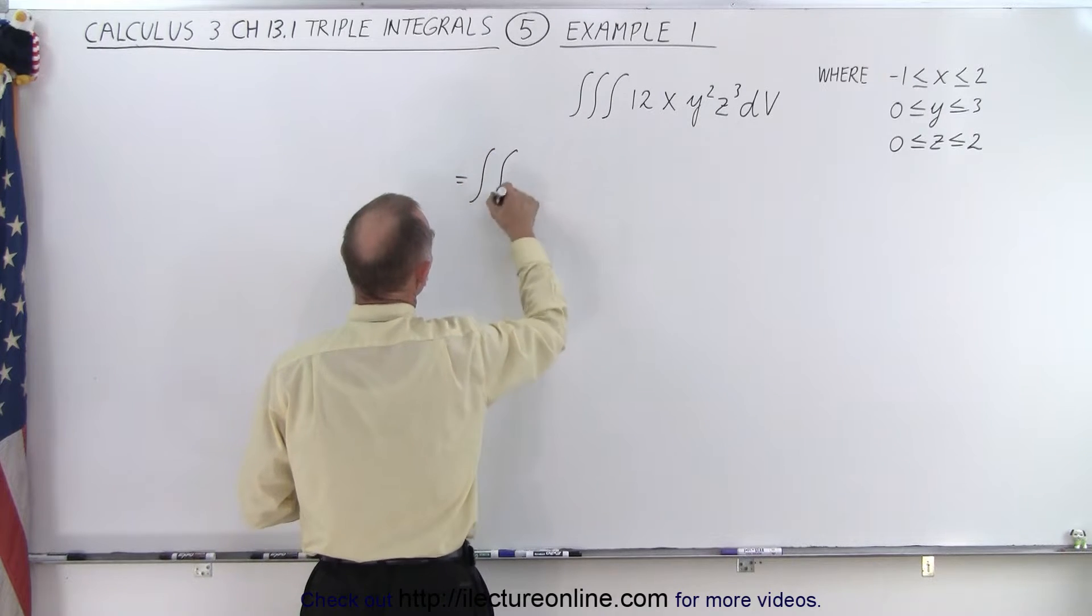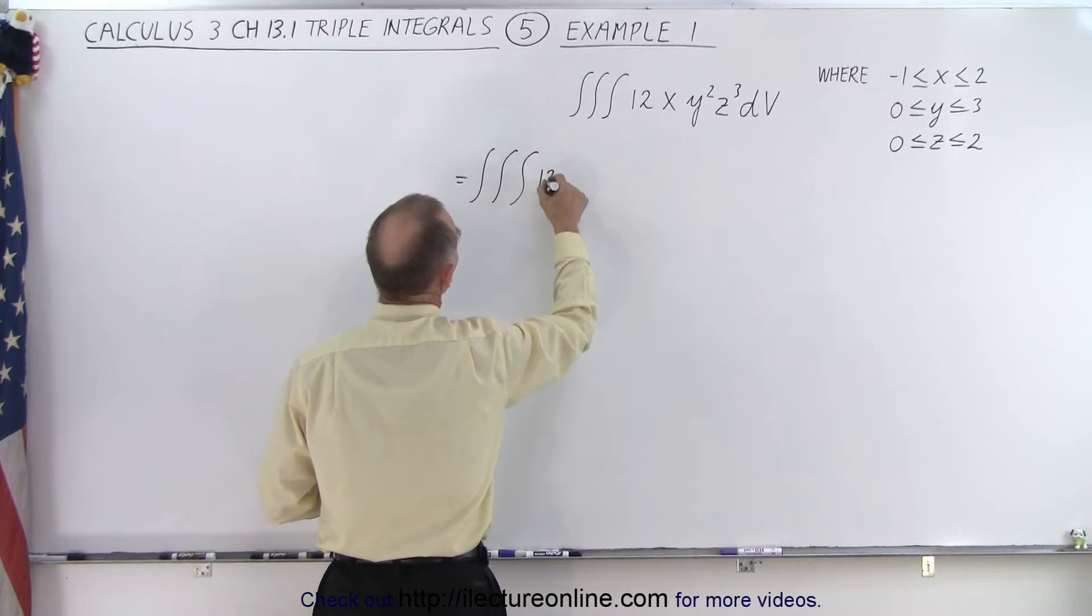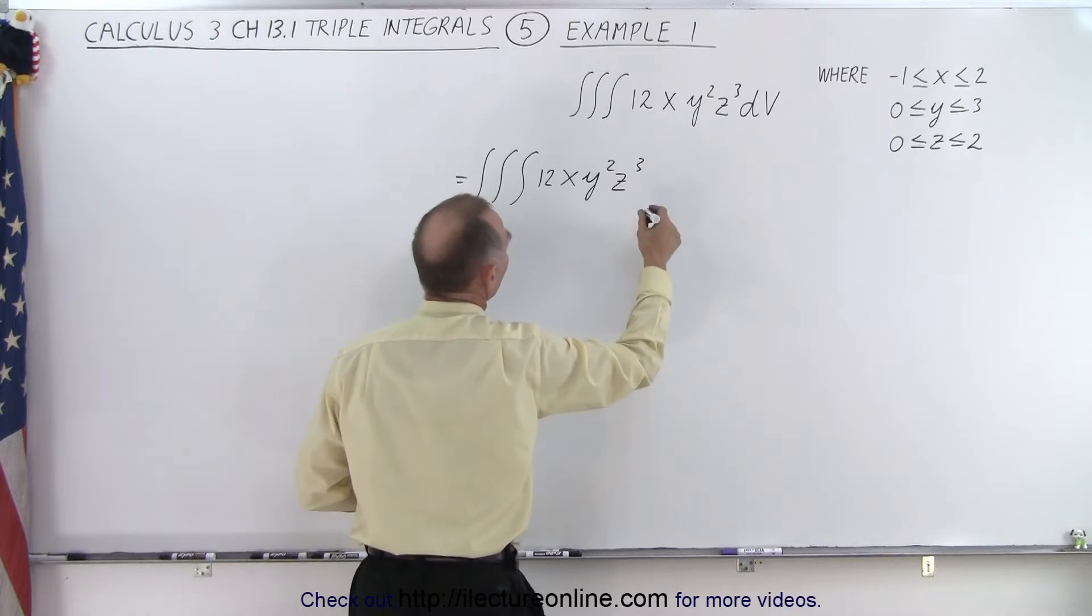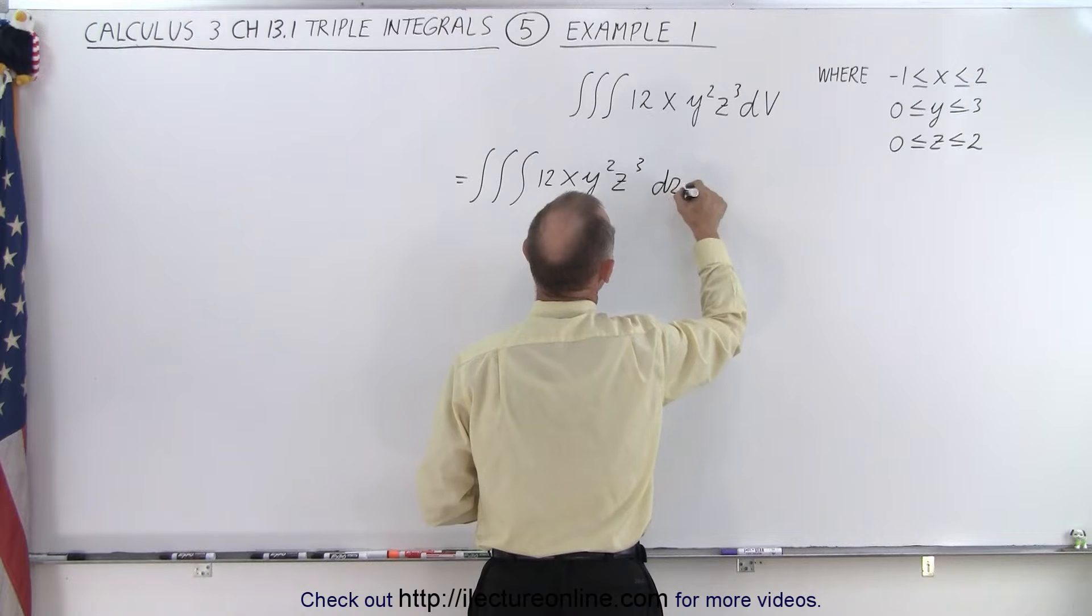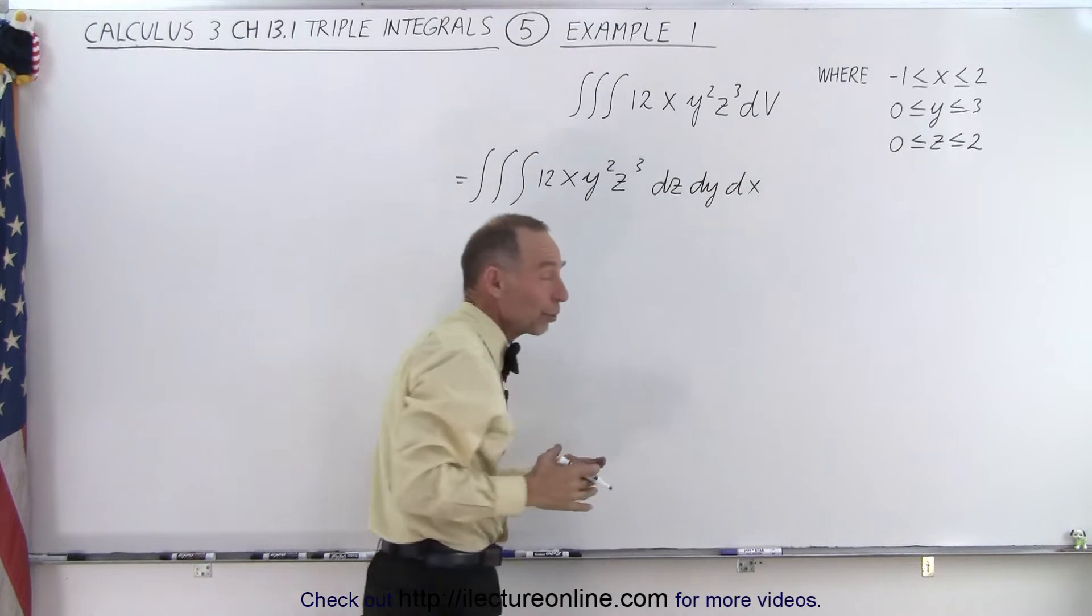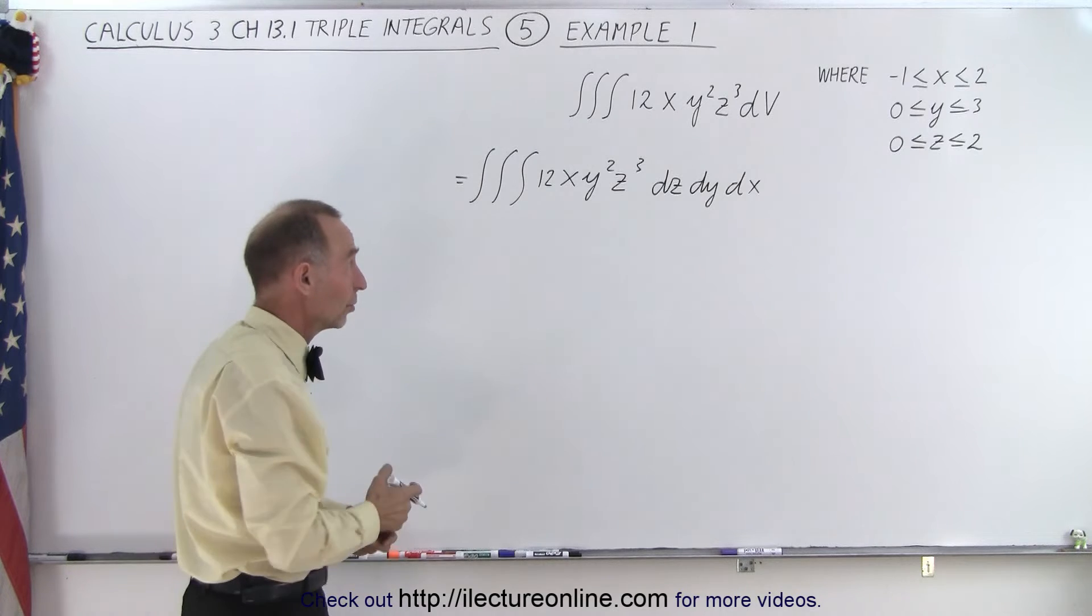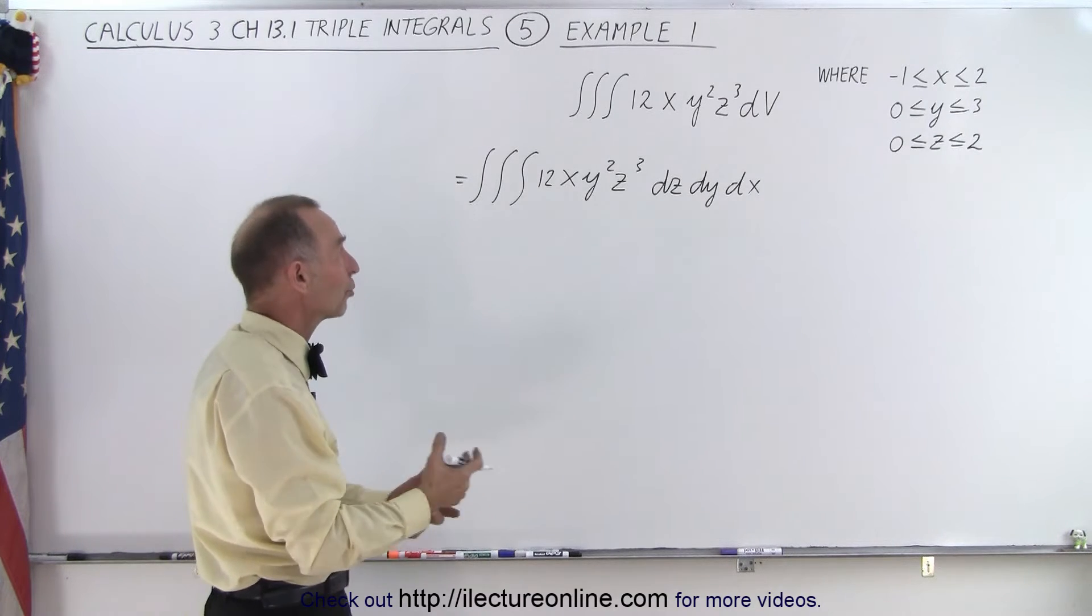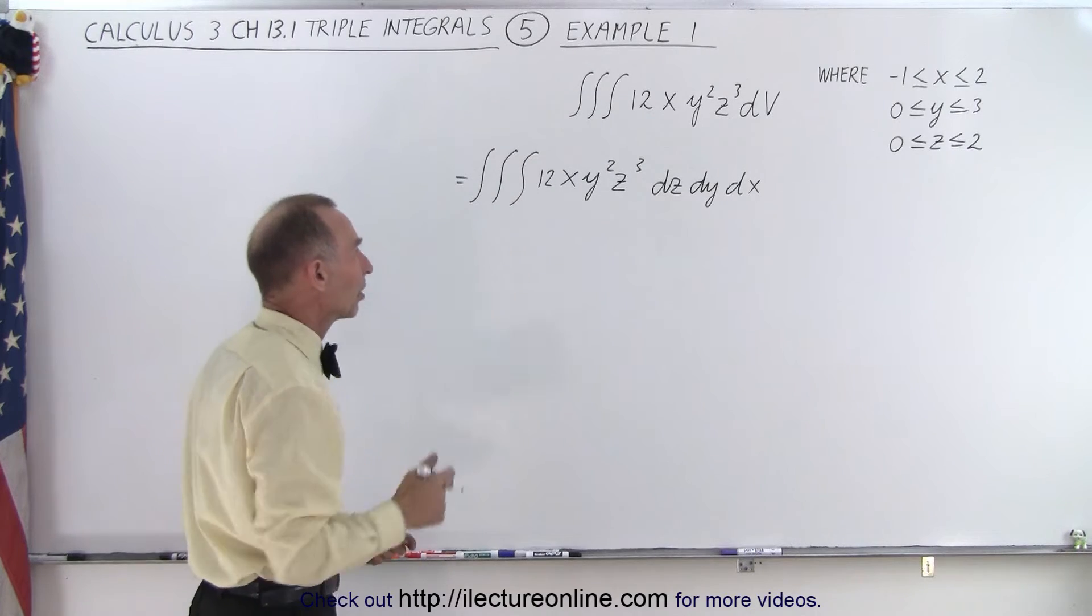So this is equal to the triple integral of 12xy²z³ and we're going to write this as dz dy dx. Now typically the order doesn't really matter, we can do dx dy dz, dy dz dx, doesn't matter which order you take as long as you match the limits.